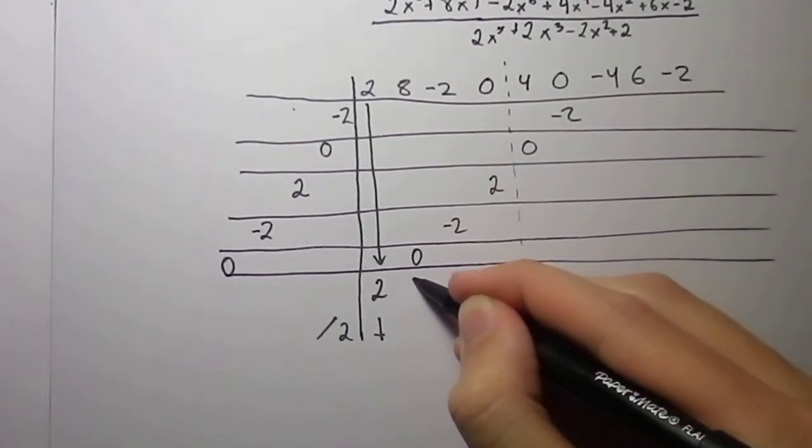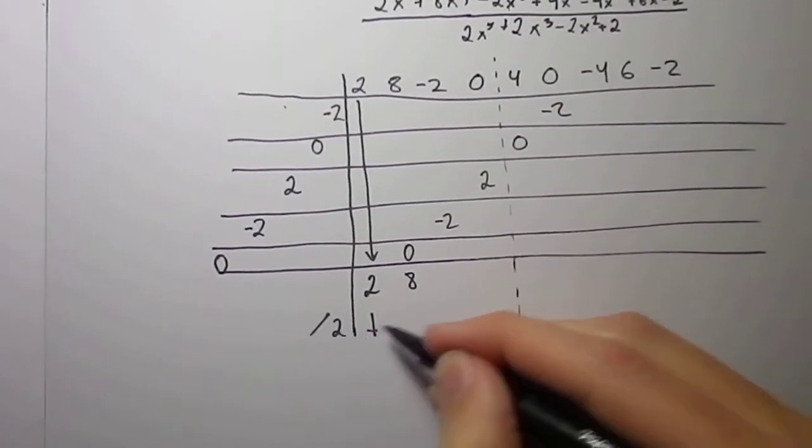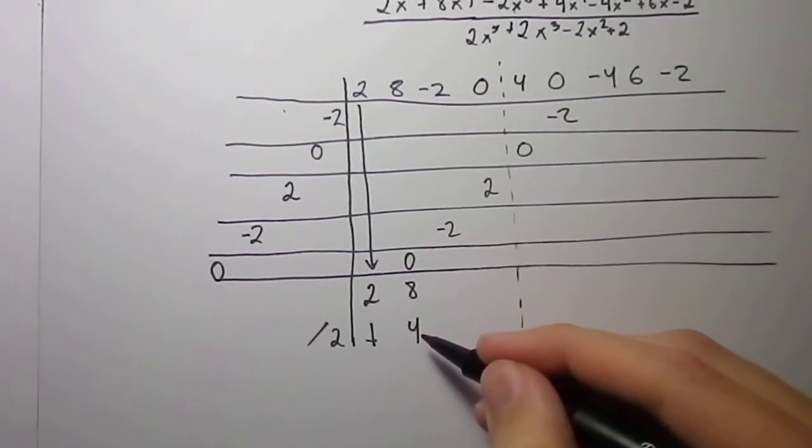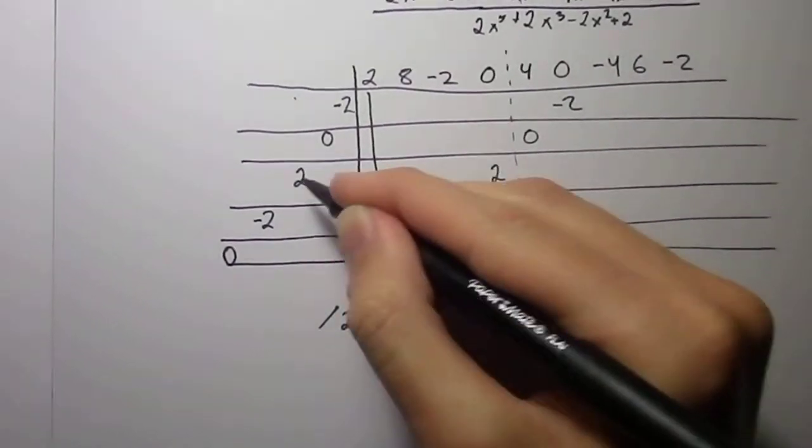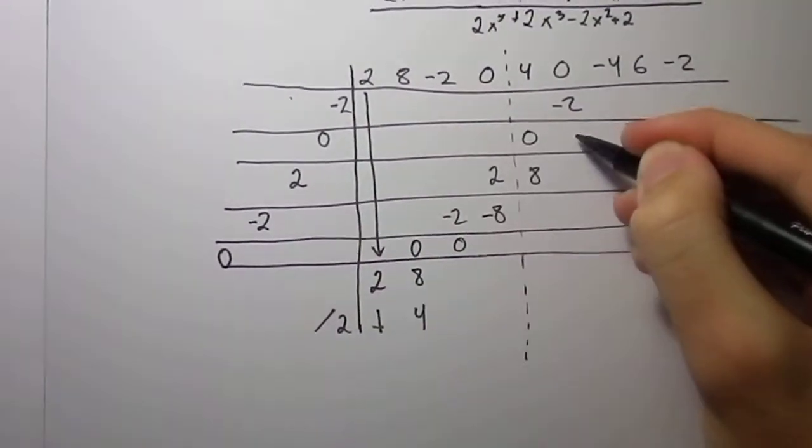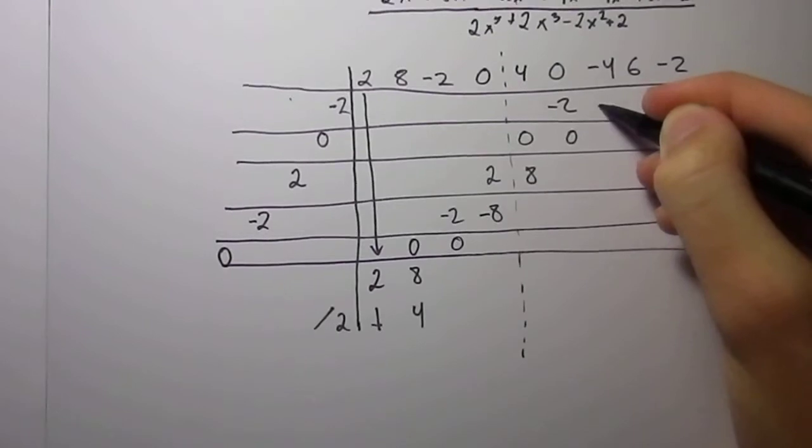Now, you take 8 plus 0, which is 8. Divide that by 2 is 4. And then take 4 times 0 is 0. 4 times negative 2 is negative 8. 4 times 2 is 8. 4 times 0 is 0. And 4 times negative 2 is negative 8.